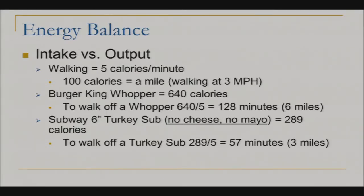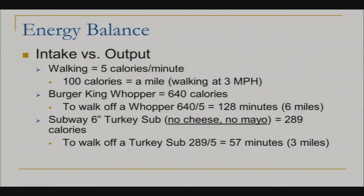Let's look at a lower calorie alternative — the same volume of food but far fewer calories. A Subway six-inch turkey sub, no cheese, no mayonnaise, has 289 calories. So to walk that turkey sub off, burning five calories per minute, you'd have to walk for 57 minutes or three miles — half the amount of exercise because there's half the amount of calories.